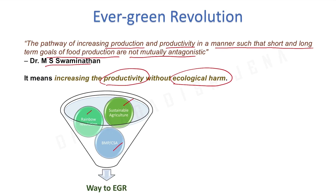The next pathway is climate smart agriculture. The climate is changing and crops are adapting, but that adaptation is slow. We need to mitigate climate change and develop practices that have a positive impact on agriculture. These three basic aspects — sustainable agriculture, rainbow revolution, and climate smart agriculture — will be the way to achieve the Evergreen Revolution.